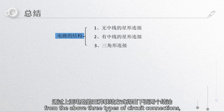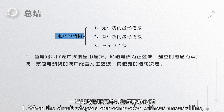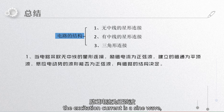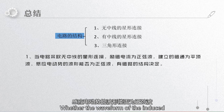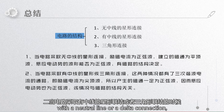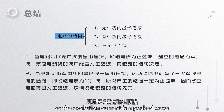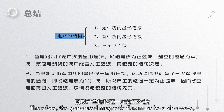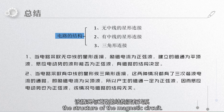In summary, from the above three types of circuit connections, we can derive the following two conclusions. 1. When the circuit adopts a star connection without a neutral line, the excitation current is a sine wave and the established magnetic flux is a flat-topped wave. Whether the waveform of the induced electromotive force can be a sine wave is determined by the structure of the magnetic circuit. 2. When the circuit adopts a star connection with a neutral line or a delta connection, both situations have a path for the third harmonic current, so the excitation current is a peaked wave. Therefore, the generated magnetic flux is a sine wave and the induced electromotive force is also a sine wave — this situation has nothing to do with the structure of the magnetic circuit.